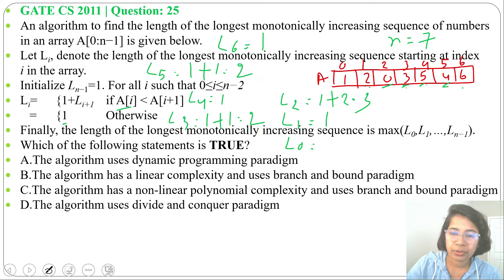So finally, length of the longest monotonically increasing sequence is max of L_0 till L_6. So L_0 we got 2, L_1 is 1, L_2 is 3, L_3 is 2, L_4 is 1, L_5 is 2, L_6 is 1.